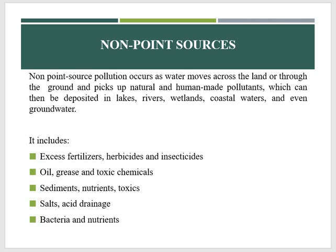Salts mainly come from irrigation practices, and acid drainage comes from abandoned mines. Bacteria and nutrients come from livestock and faulty septic systems — these are common non-point sources of pollutants. These pollutions have harmful effects on drinking water supplies, fisheries, and wildlife.